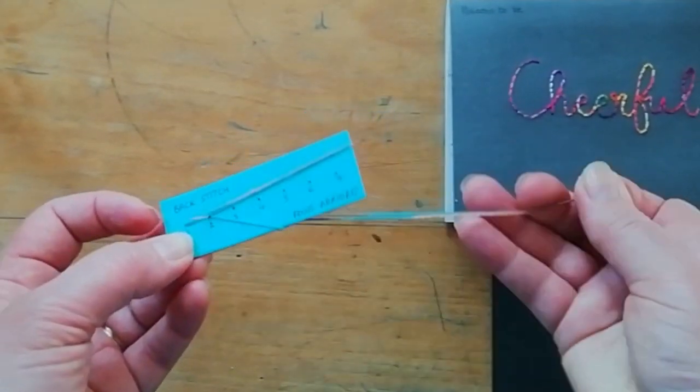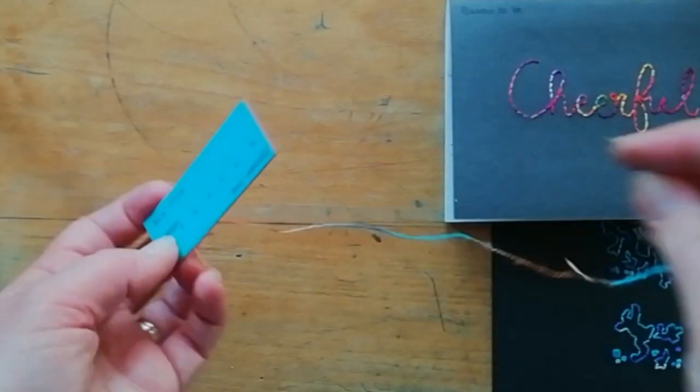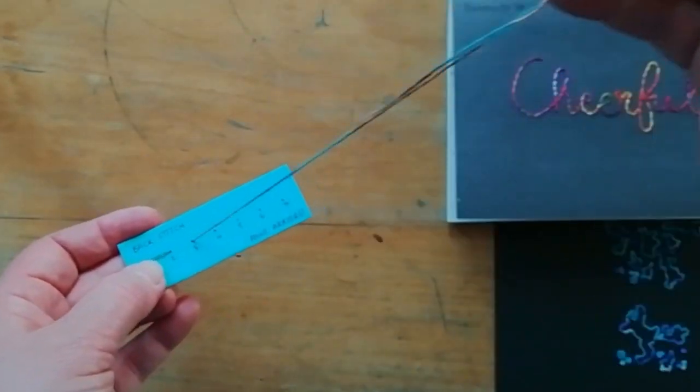So we go up one, down two, and then up three, but this is where it changes.